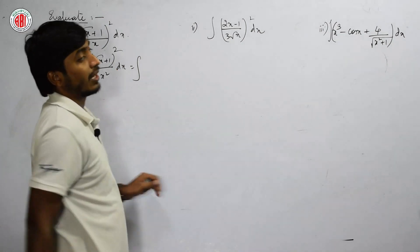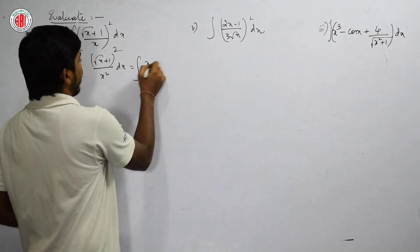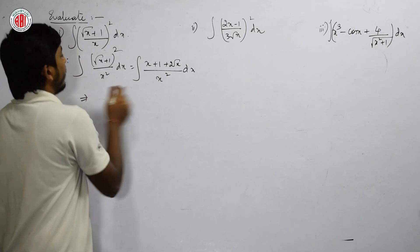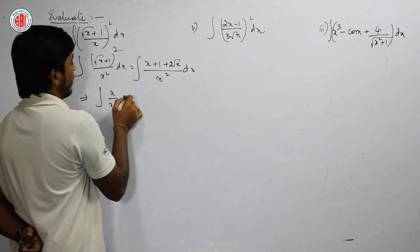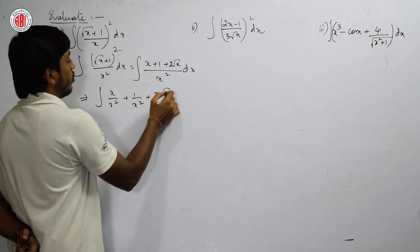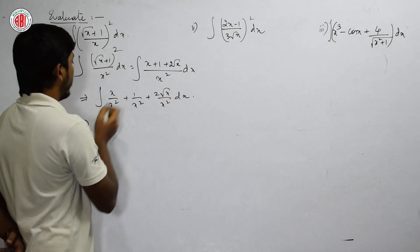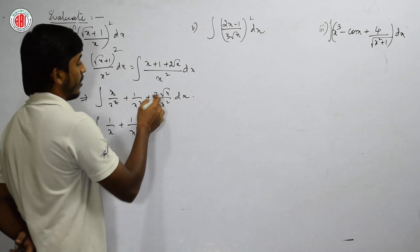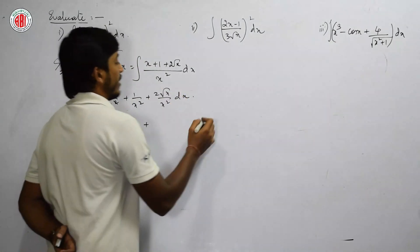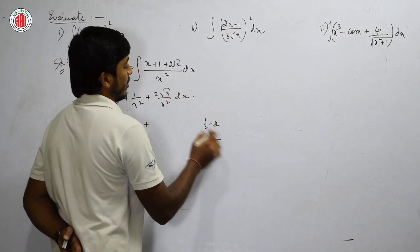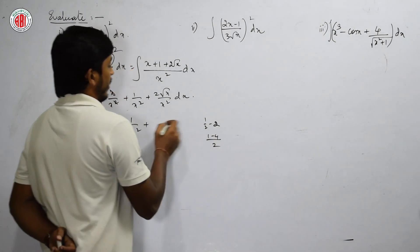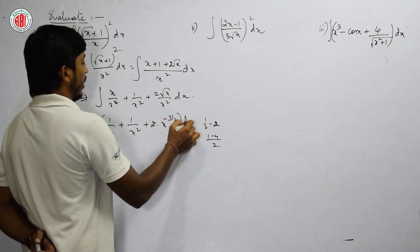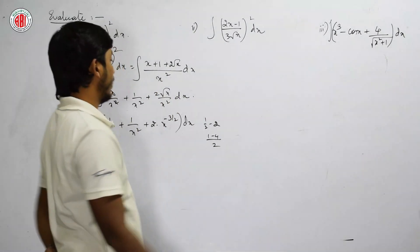Expanding using (a+b)² = a² + 2ab + b²: we get ∫(x + 2·(√x/x) + 1/x²) dx, which is ∫(x + 2/√x + 1/x²) dx. Now we separate each term.